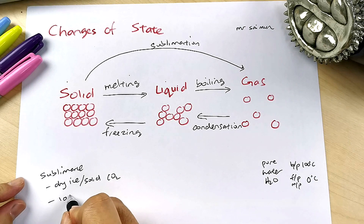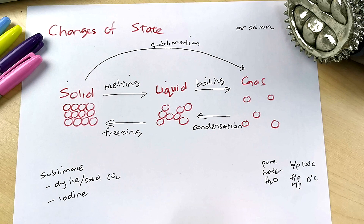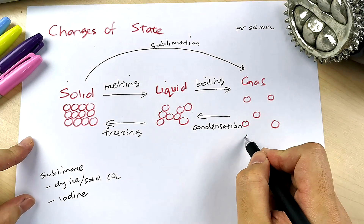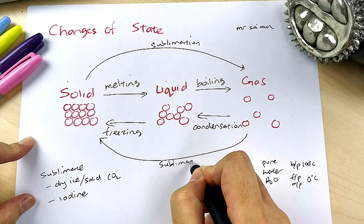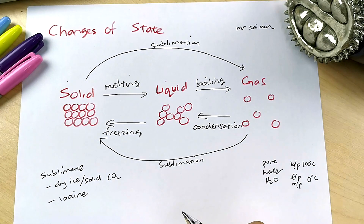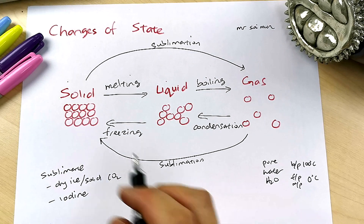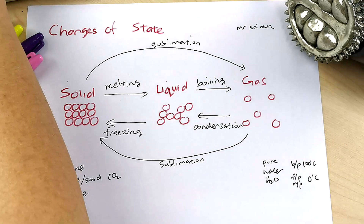Another thing that sublimates is iodine. These are the two popular ones that sublimate — dry ice and iodine. Exams may ask which substances can sublimate; you can choose one of these. Gas to solid is also called sublimation.